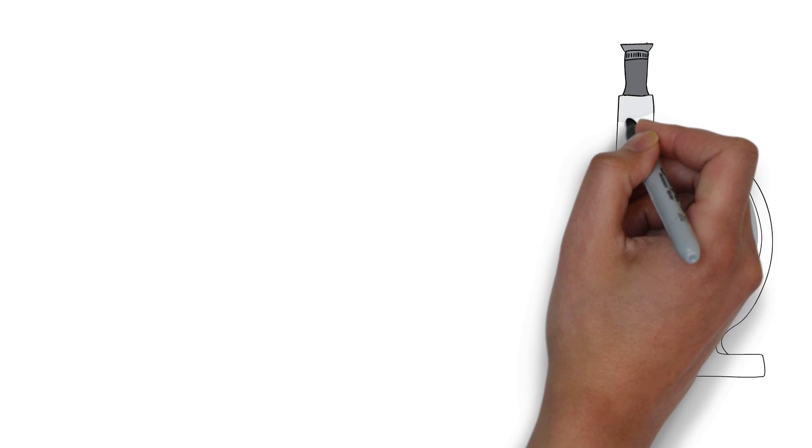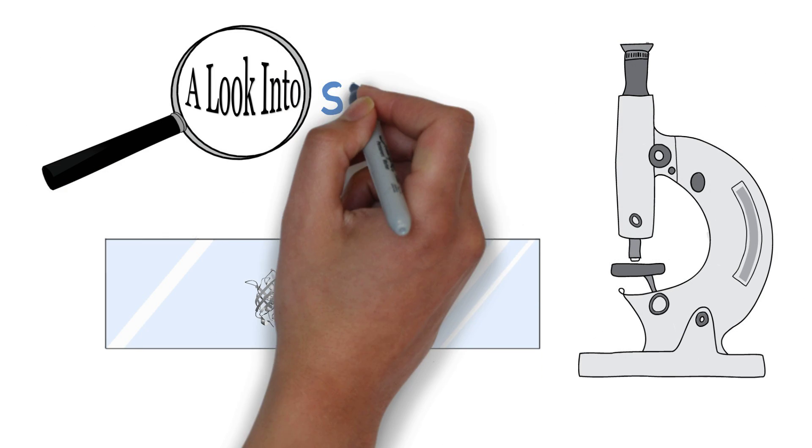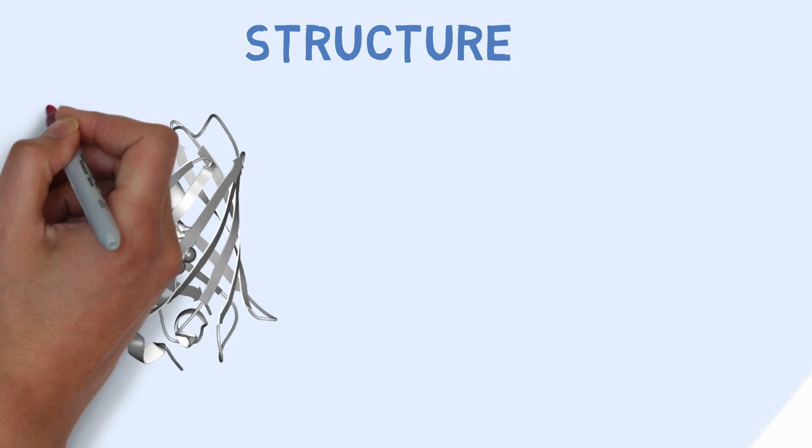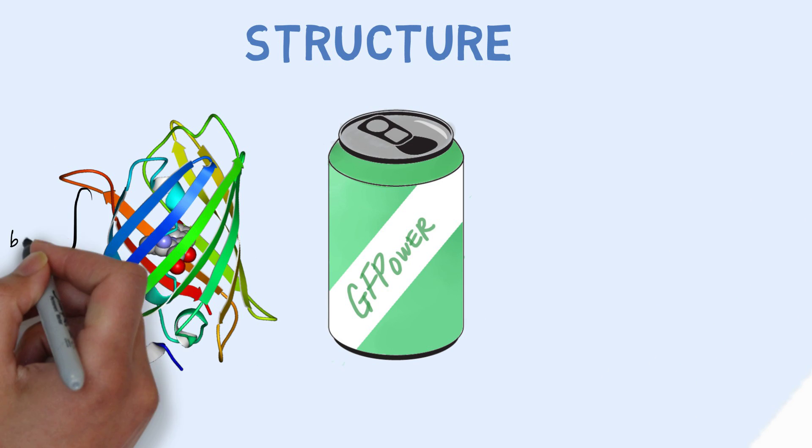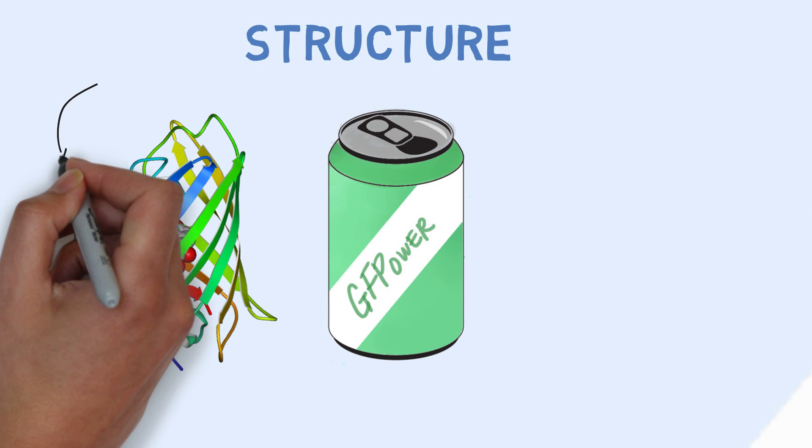To unravel more of the amazing advantages GFP brings, let's take a look at its structure. Its unique structure can be described as can-shaped. Beta sheets form the outside of the can, and the ends are capped by alpha helixes.